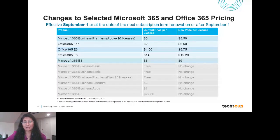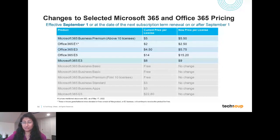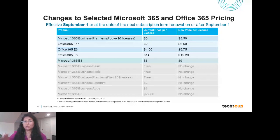The vast majority of licenses are not changing their prices, including those available as a donation. Those that are free today are not changing — the Business Basic license, the Business Premium first 10 licenses — those are still available as donations. If you have an existing E1 or E2 donation, that is not changing either; those will still be free. The pricing increases apply only to the five discounted products that were listed.